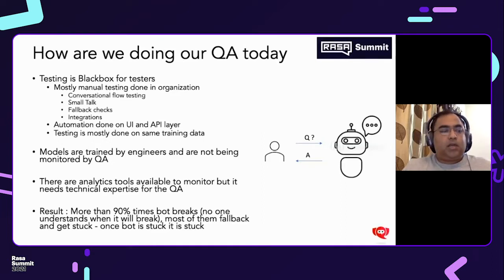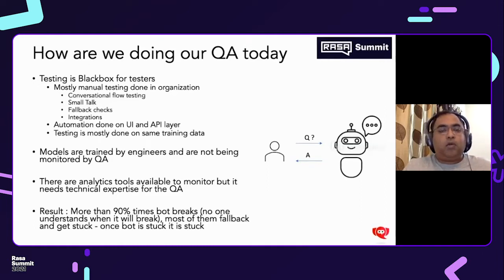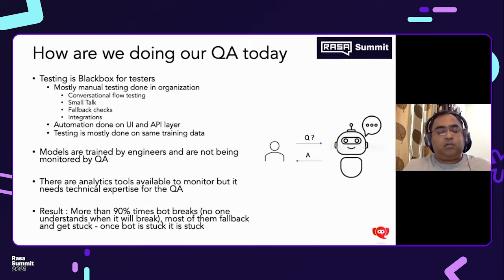What's the result here? Most of the time — 90% of the time — the bot breaks and nobody understands why it is happening. Most bots in the market basically go into fallback mode and there is nothing you can do. You just need to hit refresh on the page, and there is no easy way to reset it.